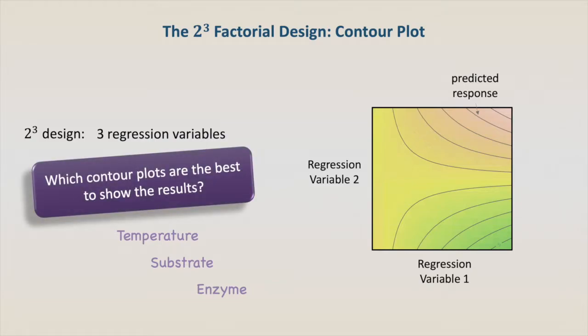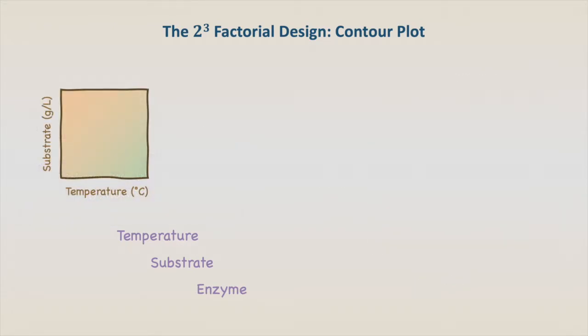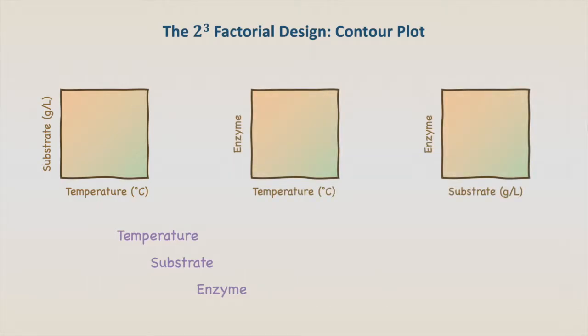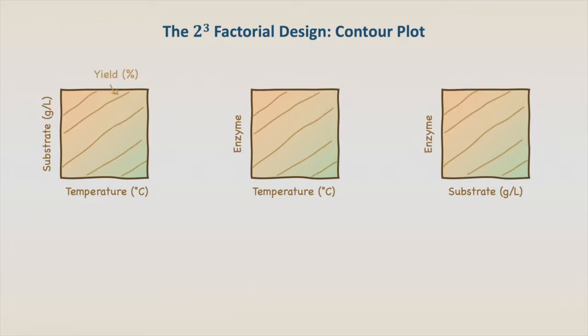So which contour plots are best to show the results? We have three options: substrate and temperature, enzyme and temperature, and enzyme and substrate, with yield shown as contour lines.